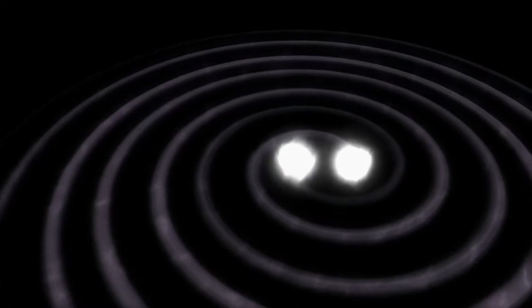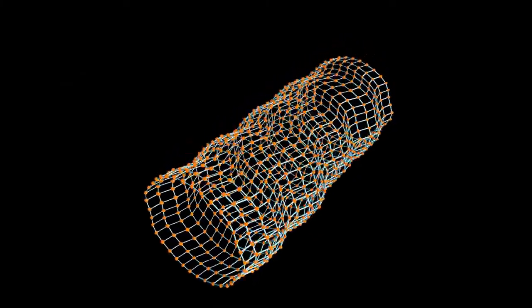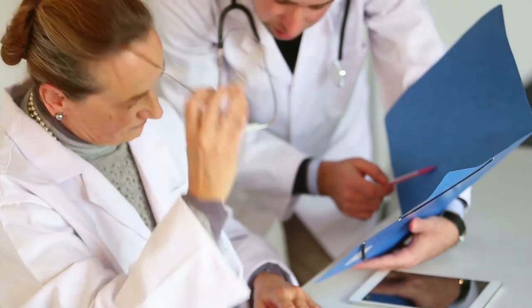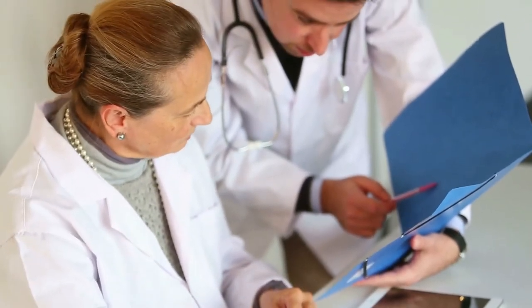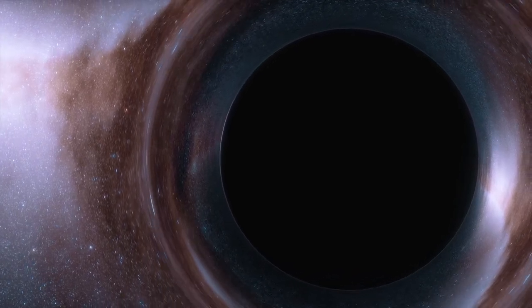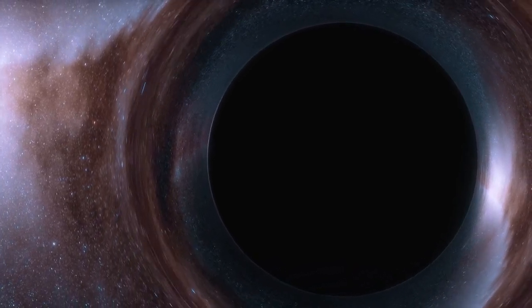The first detection of gravitational waves from black hole binaries was announced in 2016. Reporting in the Astrophysical Journal Letters, the researchers argue that PKS-2131-021 is now the second known candidate for a pair of supermassive black holes caught in the act of merging.